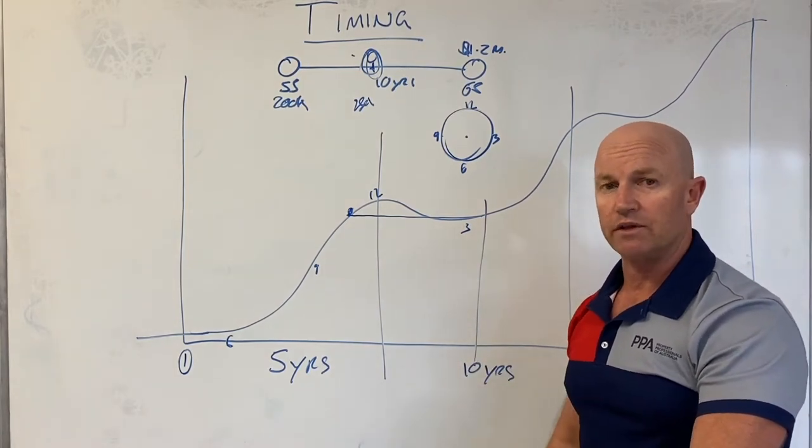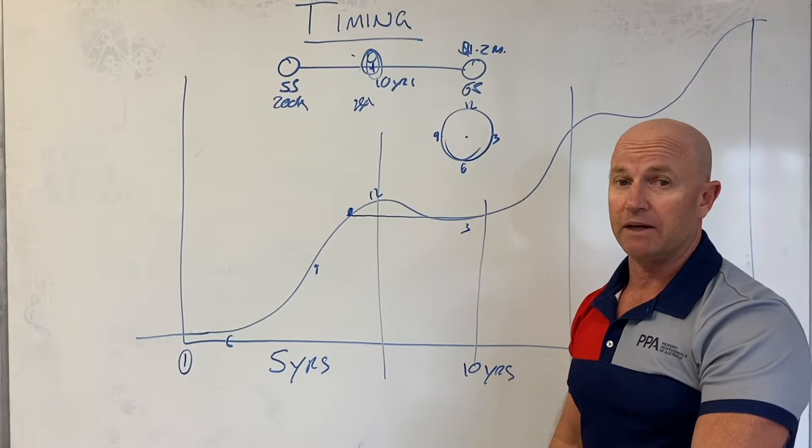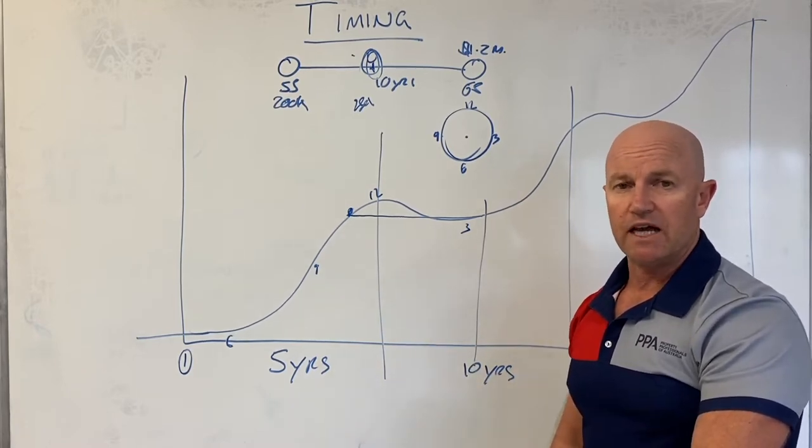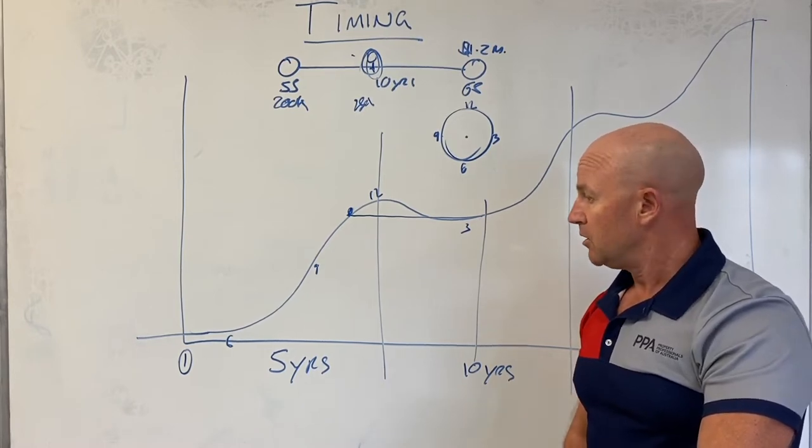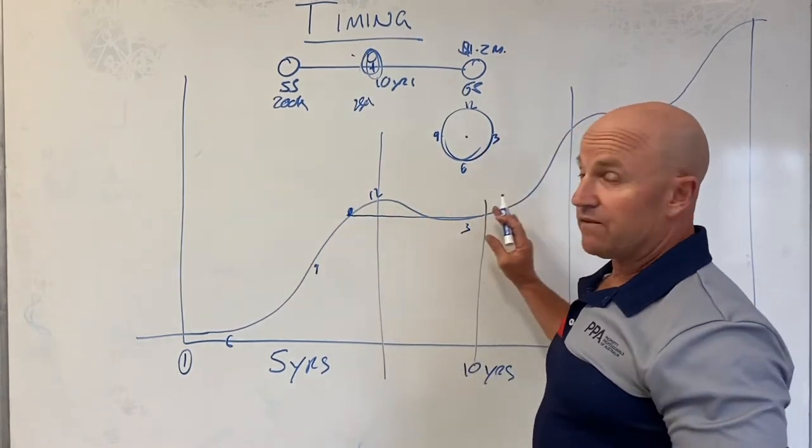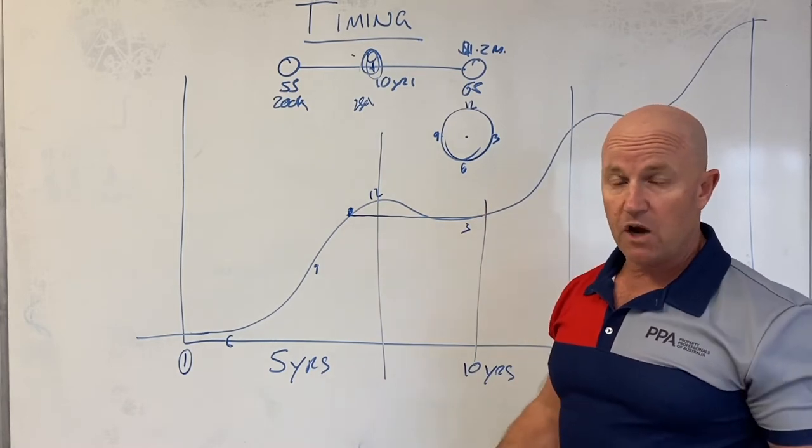You've had tax benefits for sure and maybe some good cash flow, and that's also very important. But this is about capital growth and getting that, which is a big money maker. Obviously with NDIS and social housing you can get more returns through cash flow, but the importance of timing is this is a big waste of five years of your life.